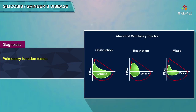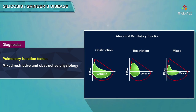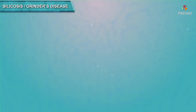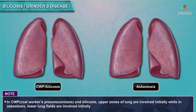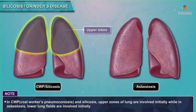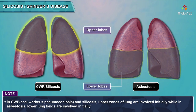Pulmonary function tests show a pattern of mixed restrictive and obstructive physiology, commonly with oxygen desaturation on exertion. In coal workers' pneumoconiosis (CWP) and silicosis, the upper zones of the lung are involved initially, while in asbestosis the lower lung fields are involved initially.